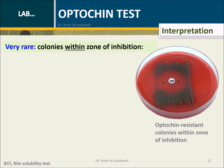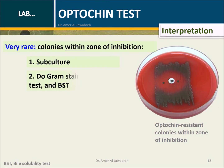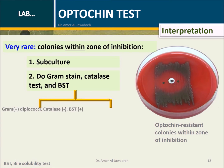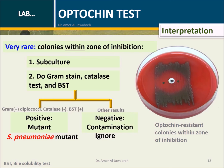Very rare colonies within the zone of inhibition: First, subculture these colonies. Second, perform gram stain, catalase test, and bile solubility test (BST). If the organism is gram-positive diplococci, catalase negative, and BST positive, then it is an S. pneumoniae mutant. Other results indicate contamination — ignore.